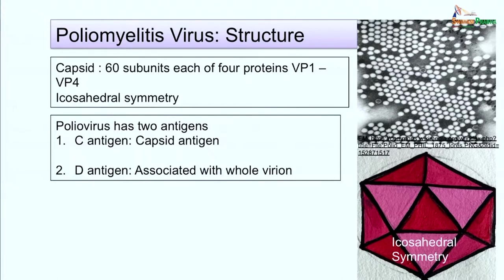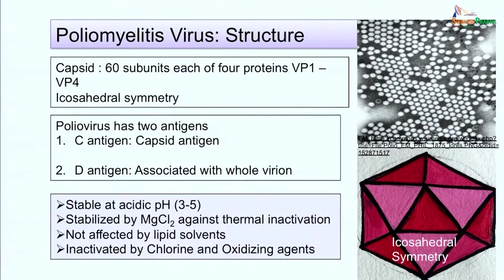Poliovirus has two antigens: C antigen, also known as capsid antigen, coreless antigen, or heated antigen; and D antigen, associated with the whole virion, also known as native antigen. Poliovirus is stable at acidic pH between 3 and 5, and is stabilized against thermal inactivation by magnesium chloride. It is not affected by lipid solvents like ether, chloroform, or bile salts, but can be inactivated by chlorine and oxidizing agents.